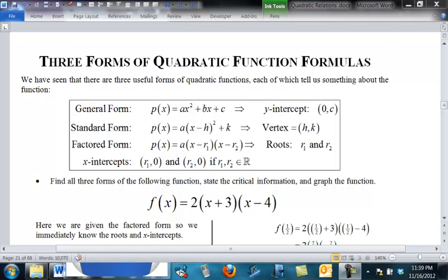And the factored form, P of X equals A times X minus root 1 times X minus root 2, tells us the roots R1 and R2. And, of course, if they're real numbers, those are X-intercepts, R1, 0, and R2, 0.